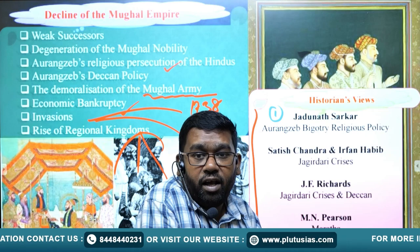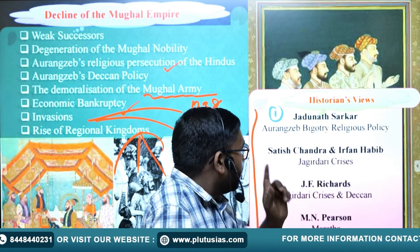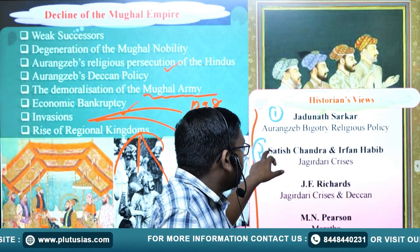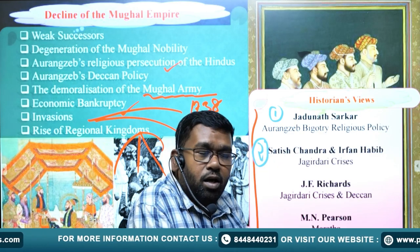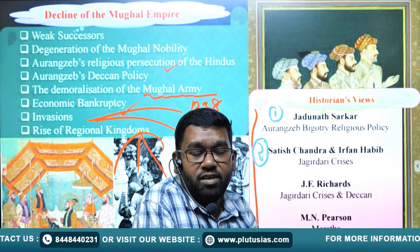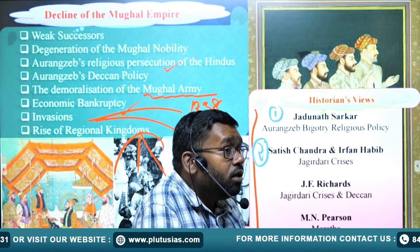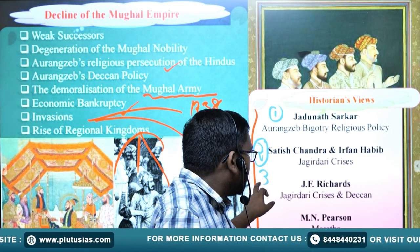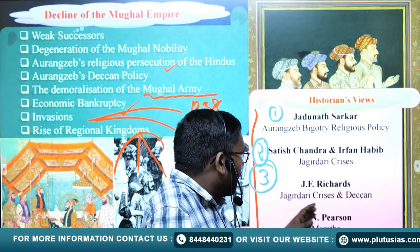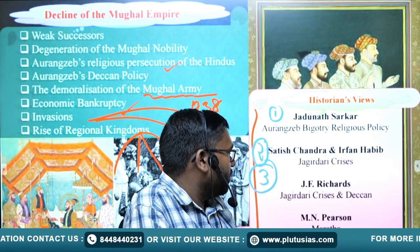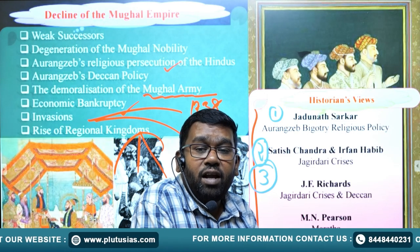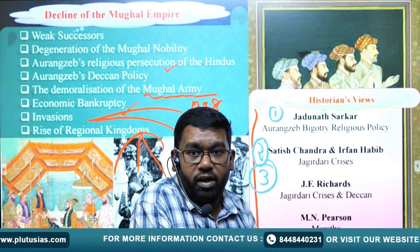The second view is given by Satish Chandra and Irfan Habib, who argue that the jagirdari crisis — the crisis among the nobility — was the major reason behind the decline of the Mughal Empire. The third historian, John F. Richards, also emphasizes the jagirdari crisis but adds that the Mughals could not utilize the newly conquered areas.